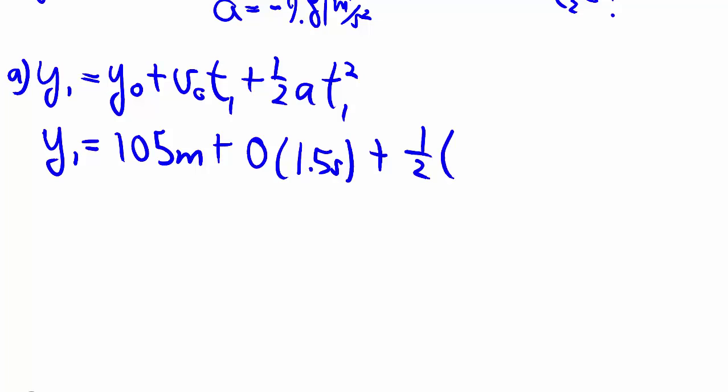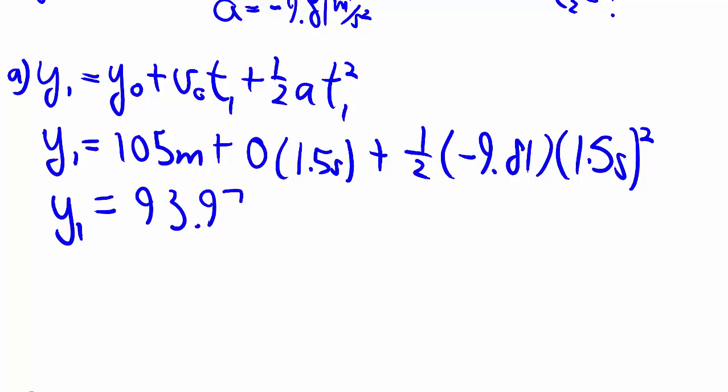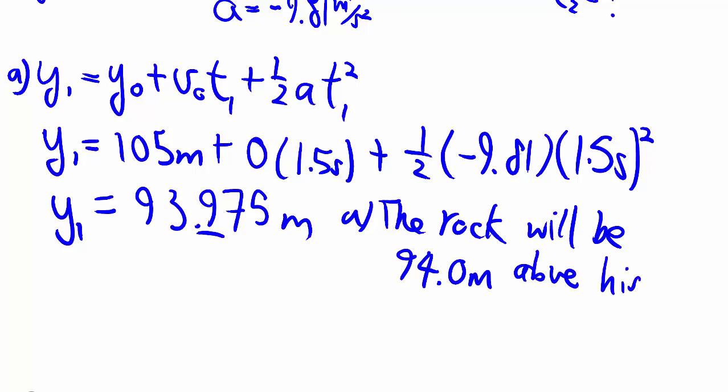Plus 1 half negative 9.81 times 1.5 seconds squared. With calculator work you'll find that we'll get this number, and so for part a, the rock will be 94 meters above his head when he sees it 1.5 seconds.